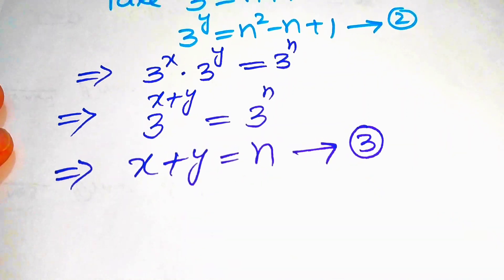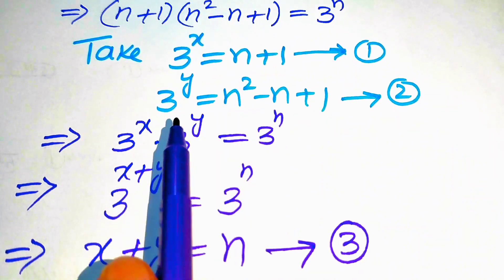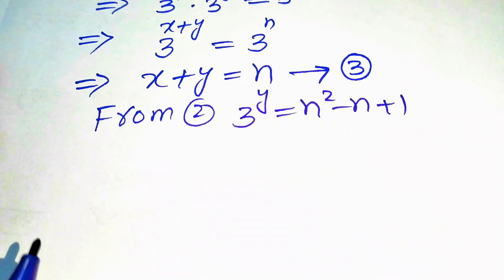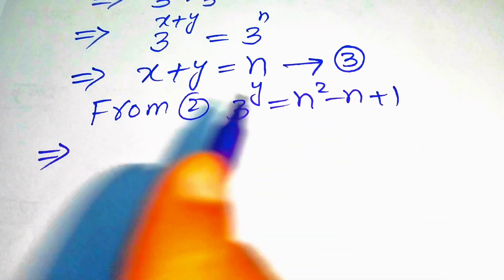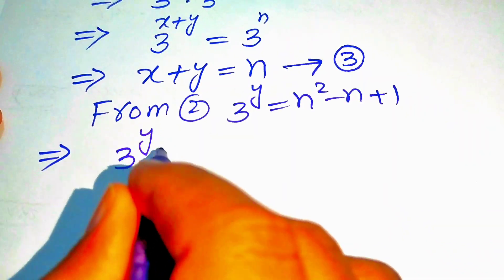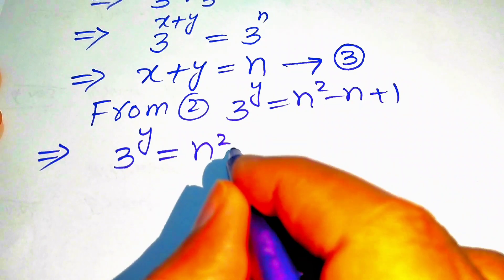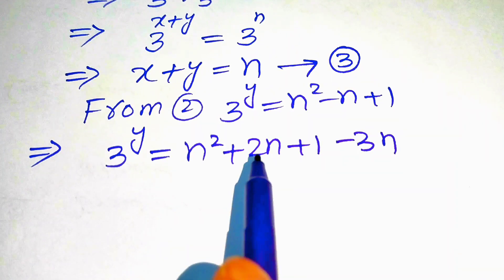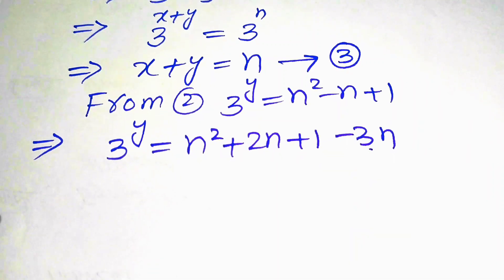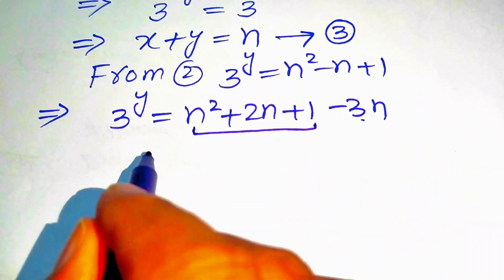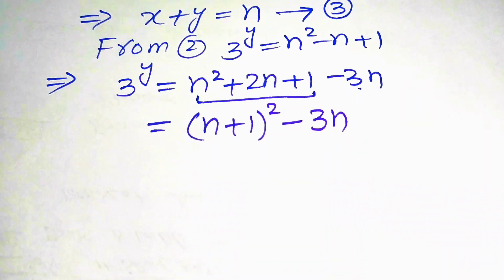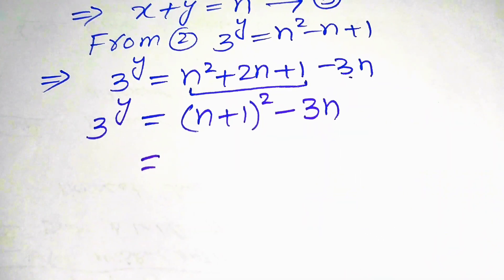Now we focus on equation 2: 3 to the power of y equals n squared minus n plus 1. We rewrite the right-hand side as n squared plus 2n plus 1 minus 3n, because 2n minus 3n equals minus n. This groups into n plus 1 whole squared minus 3 times n.